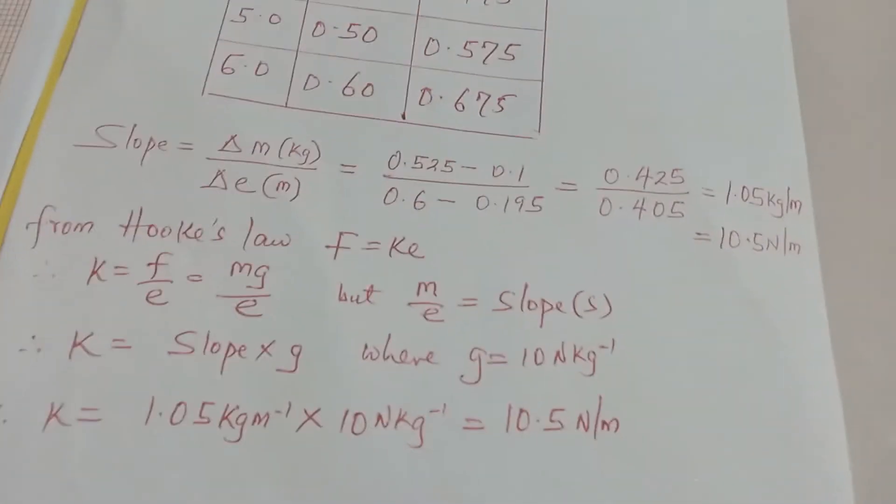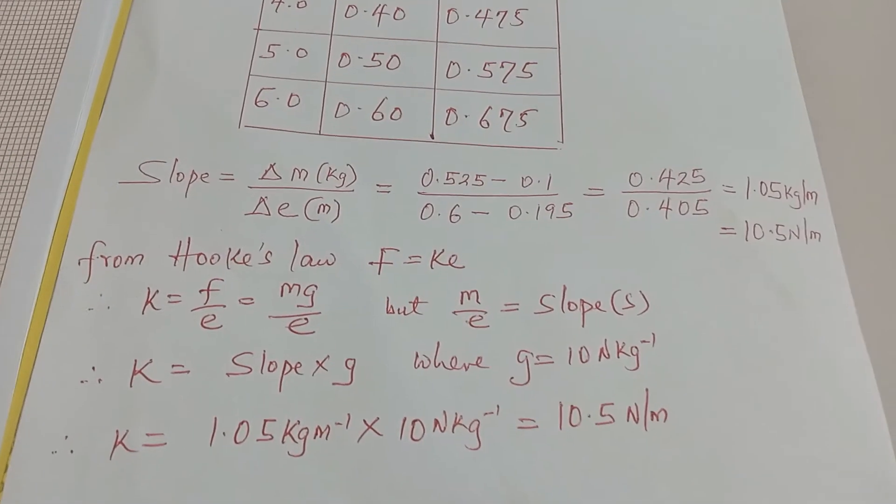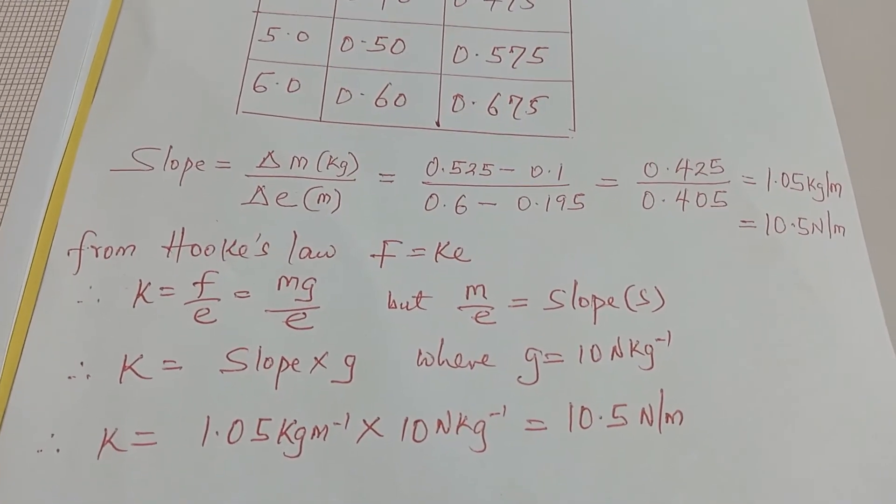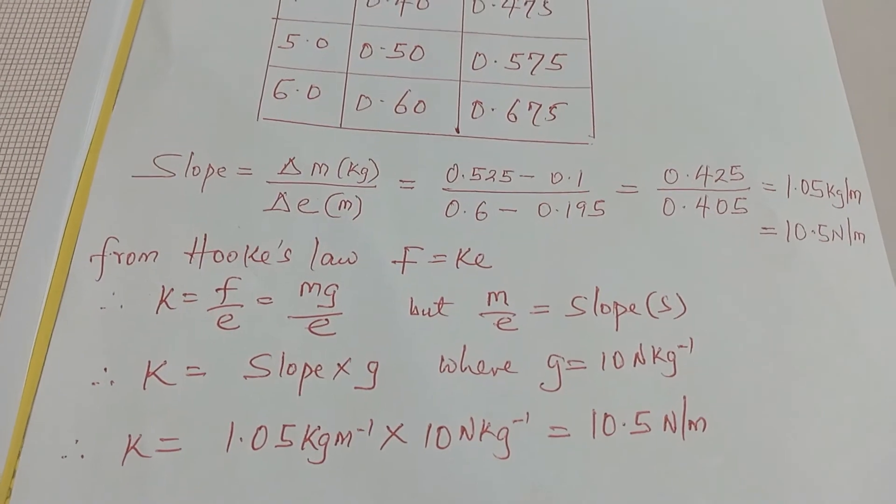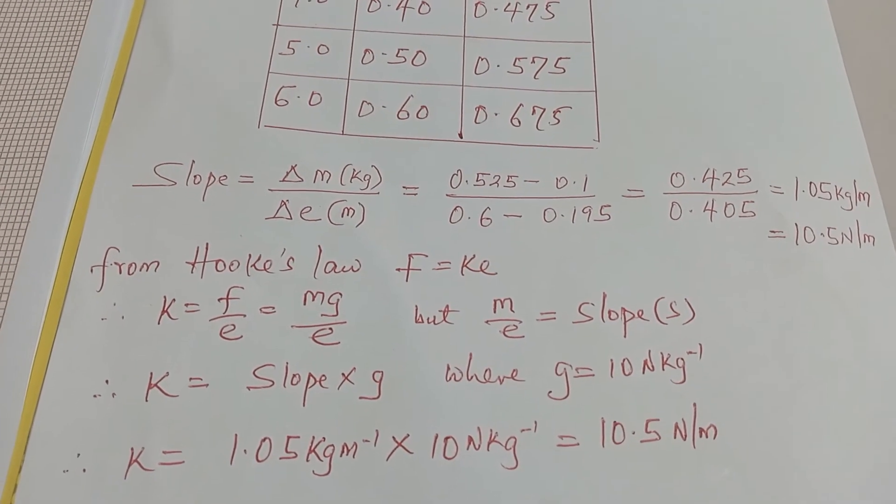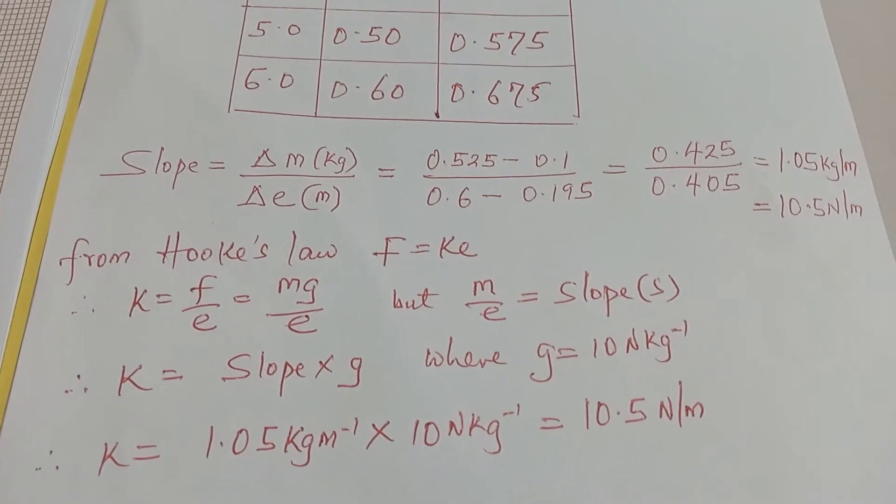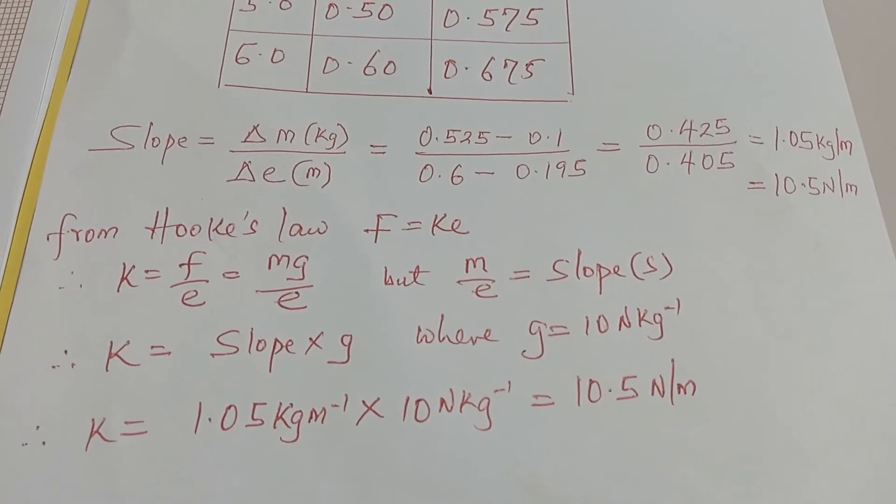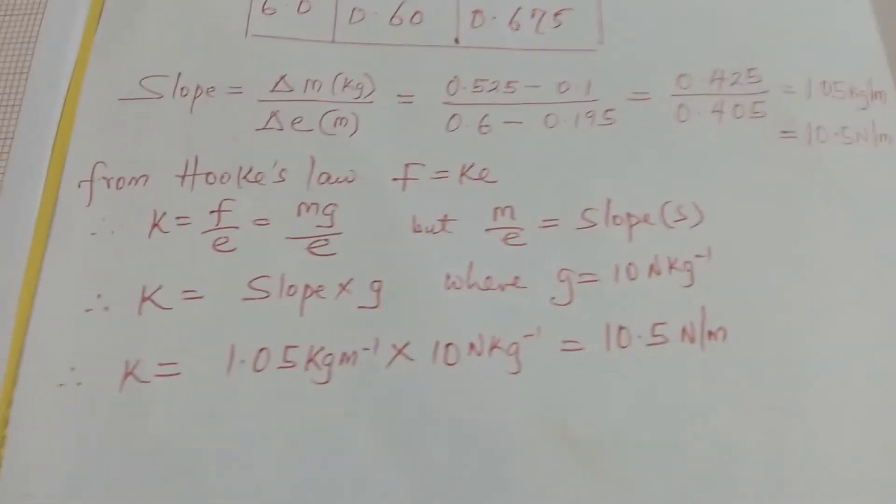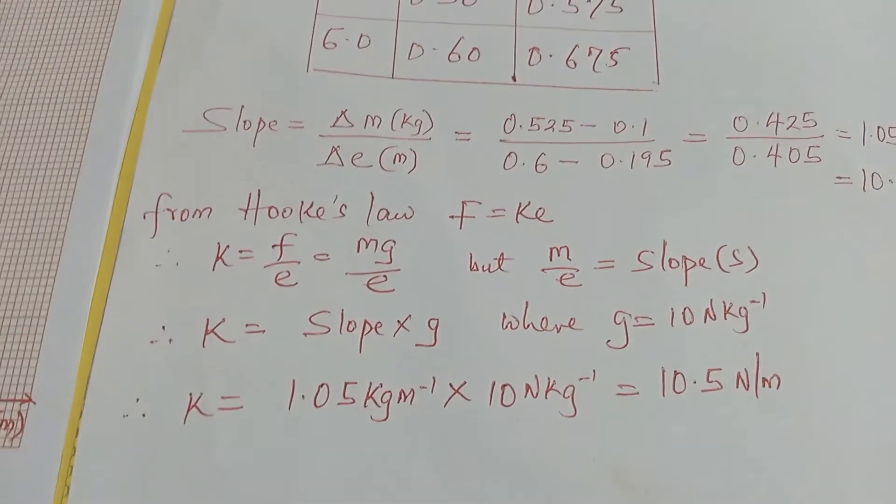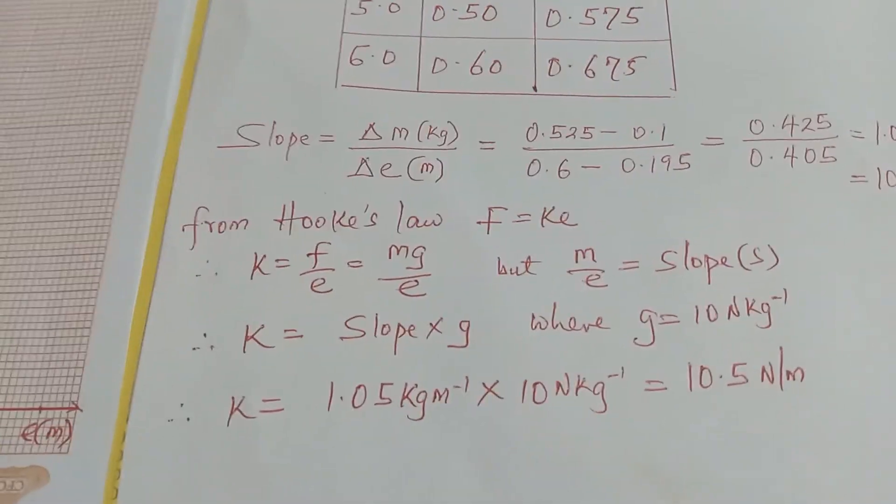So you can see from here that the slope of the graph calculated is 1.05 kg per meters, or if you want to convert it to Newton per meters you can also change that. So theoretically, if I now want to find the force constant of the spring I used...